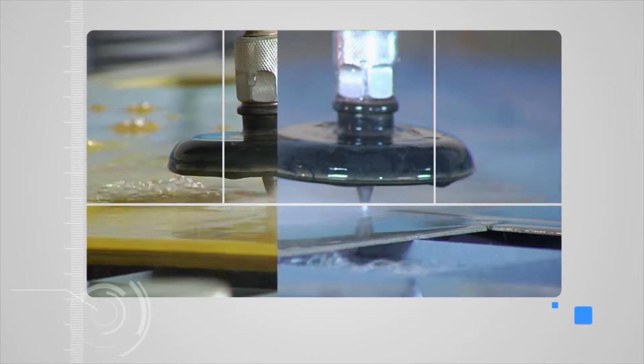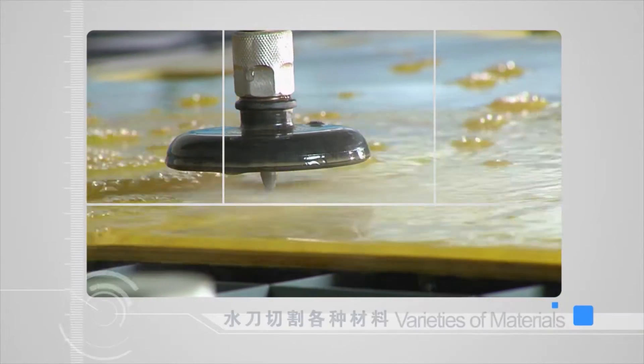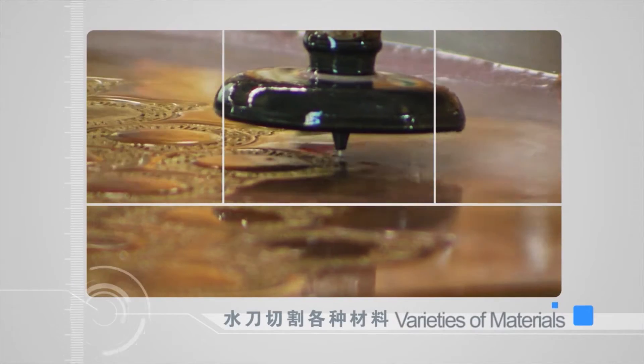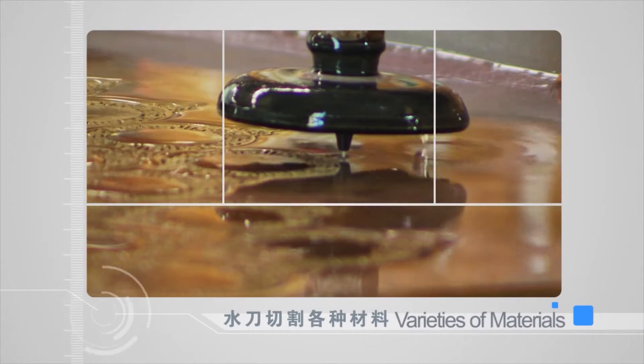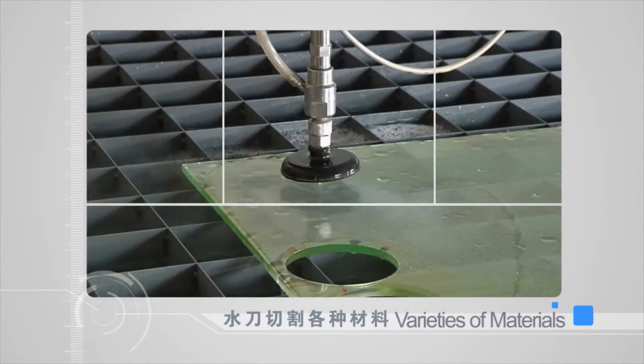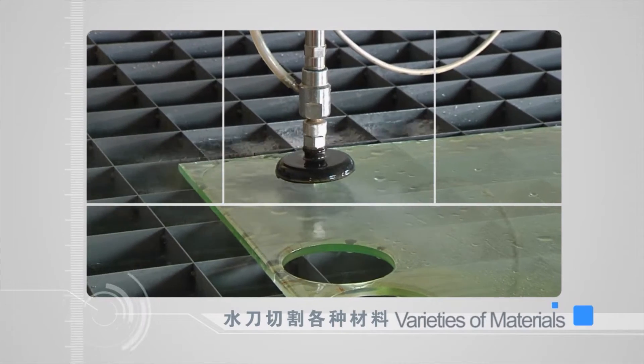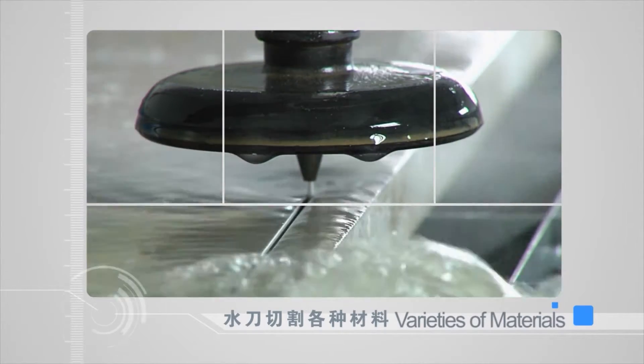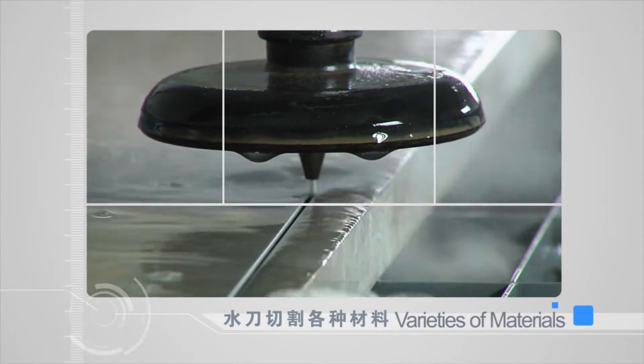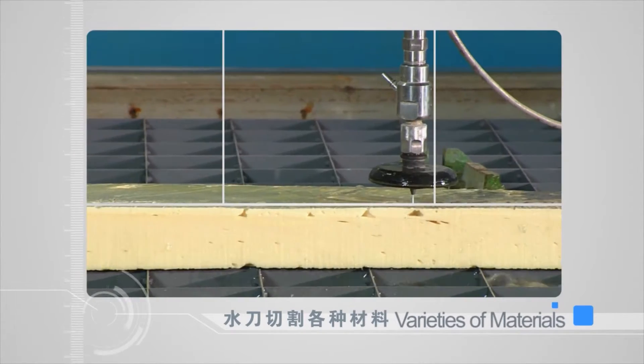Water jet can cut various materials — metal or non-metal, soft or hard, conducting or non-conducting.